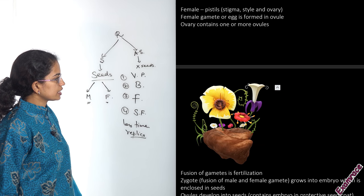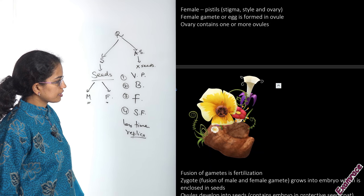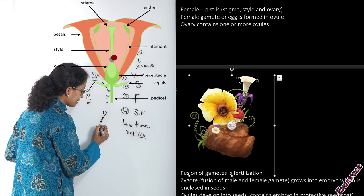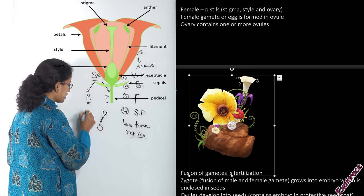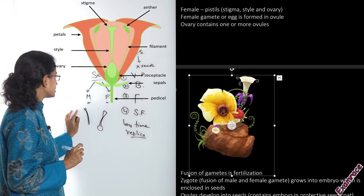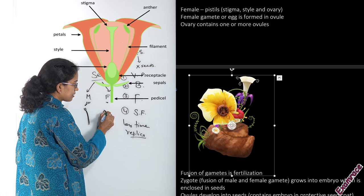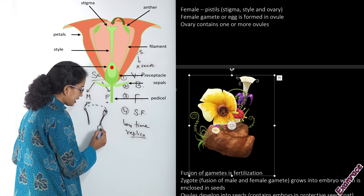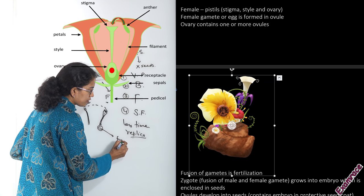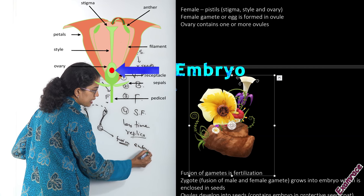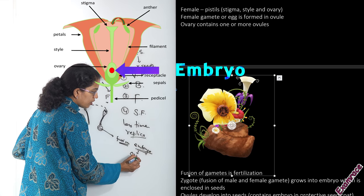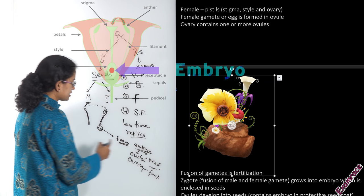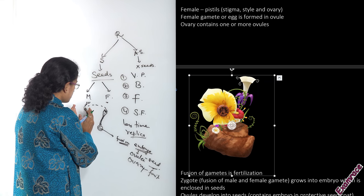The female reproductive part is located towards the center of the flower. It consists of the stigma at the top, a style below it, and the ovary at the base. The anther with the filament holds pollen grains, which are the male reproductive part. The stigma is a sticky surface — pollen sticks to it, enters the style, and moves into the ovary, where fusion of gametes takes place. This leads to embryo formation, and ultimately the ovary converts into fruit and the ovule converts into seed.